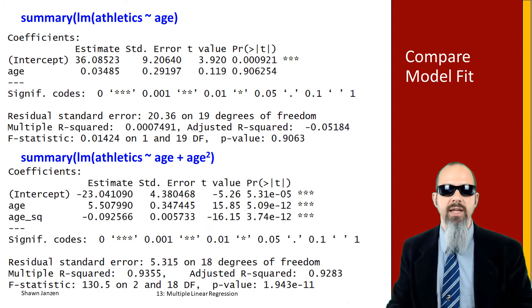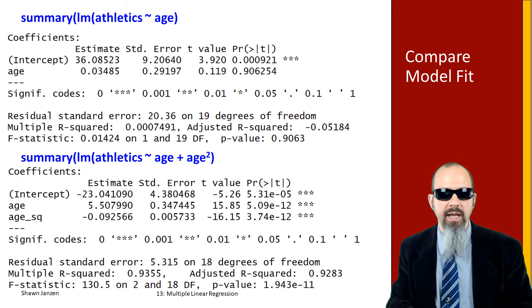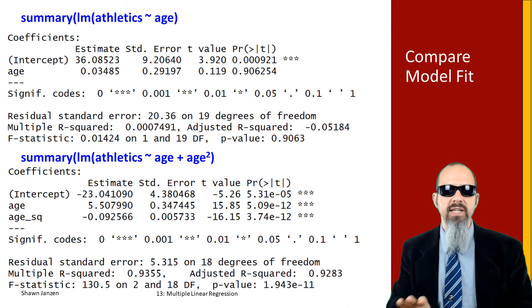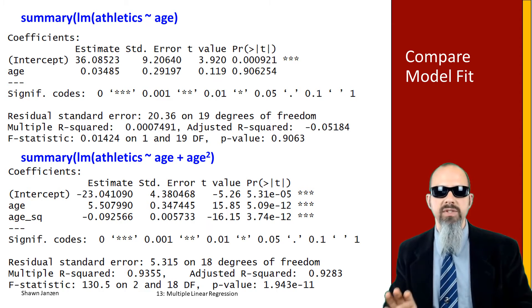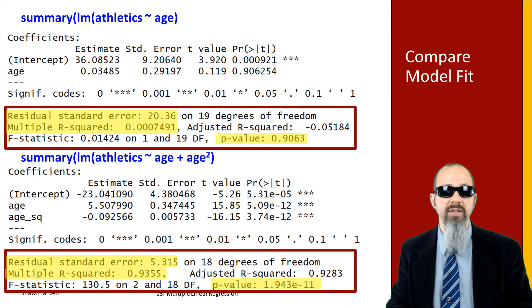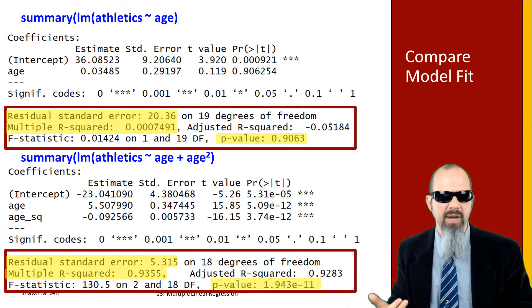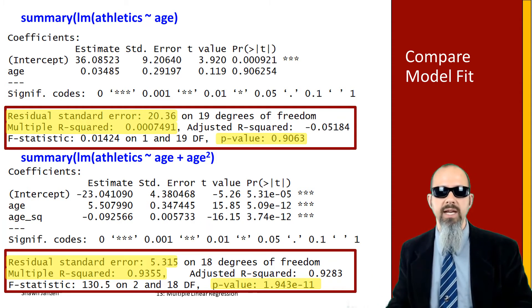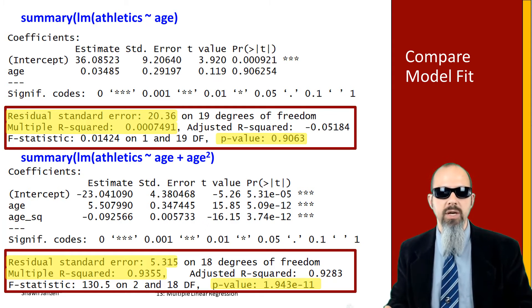Checking these model fits: when comparing the two models, the residual standard error dropped from about 20.36 with age alone down to 5.315 with age squared added. Multiple R-squared went from near zero up to 0.9335, and the p-values improved entirely. That's a fantastic model fit.